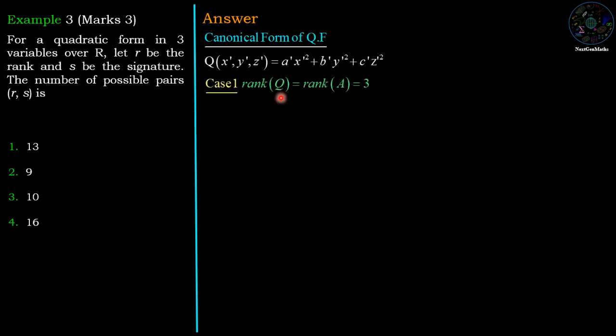Now we take cases on rank R. Since it is a quadratic form in three variables, there are four possibilities: R = 3, R = 2, R = 1, and R = 0. We begin with R = 3.